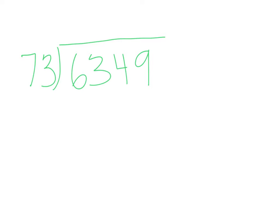This problem reads 6,349 divided by 73. If you were to solve this problem without compatible numbers it would take you a while — you'd have to write out facts of 73 to the side. But if you use compatible numbers, your life gets really easy. A lot of times students relate this to estimation because you're getting an answer that's close, but you're using compatible numbers instead of actual numbers.